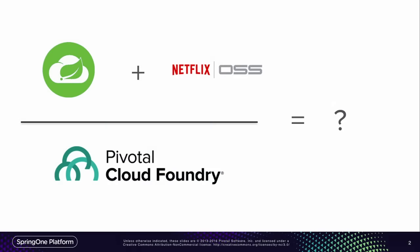We're going to cover some smaller bits and pieces of what Josh covered, and hopefully you'll be able to follow everything since we're going to be showing some of it again. So what does this equation mean to you? Spring Cloud plus Netflix OSS on top of Pivotal Cloud Foundry — well, it means happy developers, obviously.